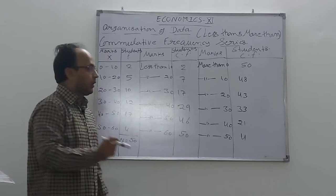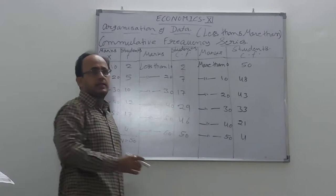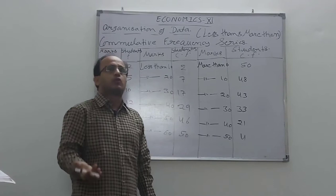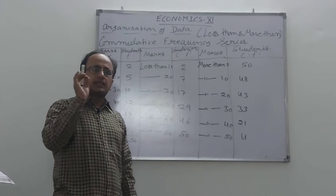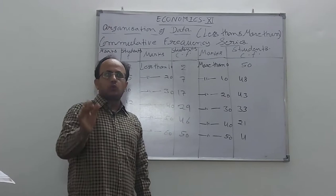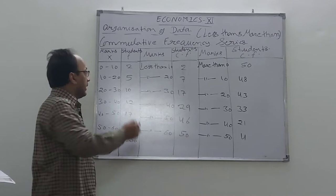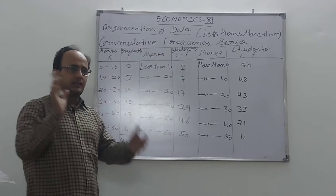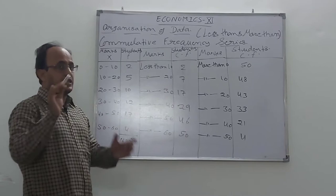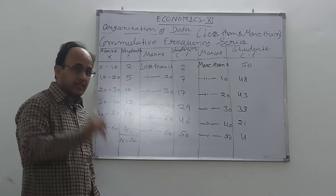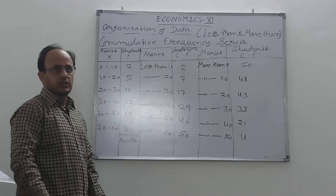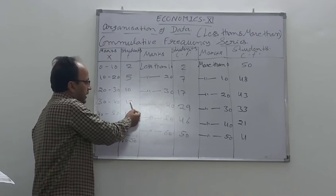To make the cumulative frequencies, we enter frequencies in successive manner. So less than 10 is 2. Less than 20: 2 plus 5 equals 7. Less than 30: 2 plus 5 plus 10 equals 17. Less than 40: 17 plus 12 equals 29. Less than 50: 29 plus 17 equals 46.